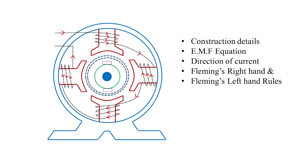Let us revise what we have seen in the last class: the construction details of the DC machine. We also dealt with the EMF equation, and the direction of currents framed in a four-pole machine. We covered Fleming's right-hand rule and Fleming's left-hand rule to obtain the directions of voltages and currents in generators and motors. The EMF equation generated is given by E = φPZ / 16A.